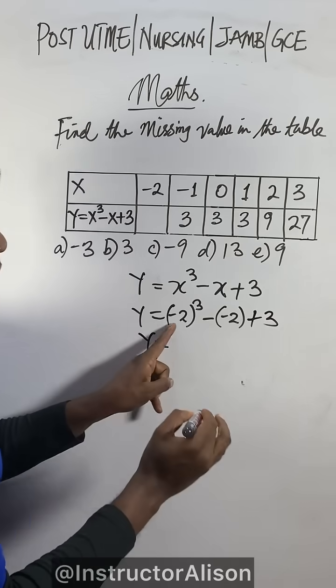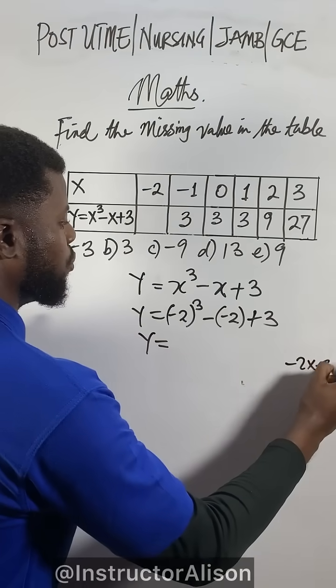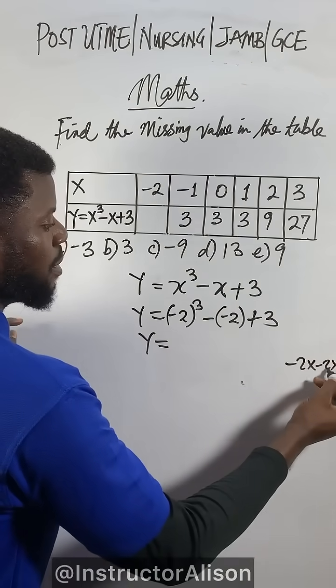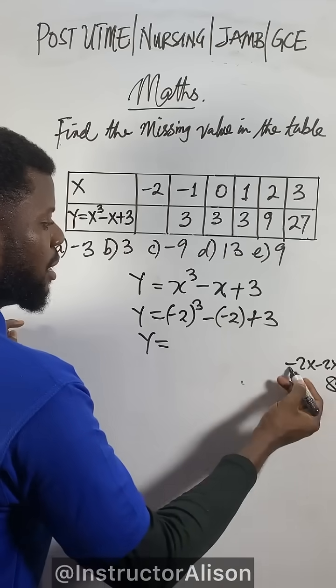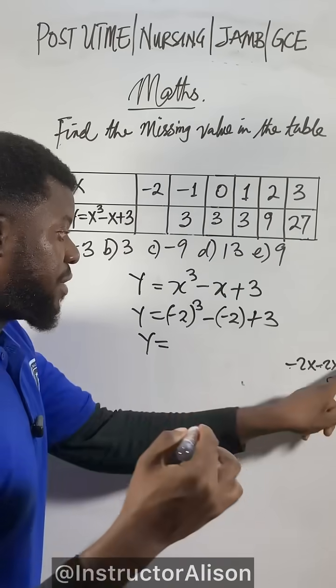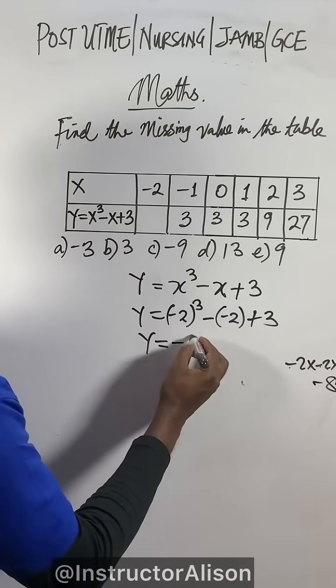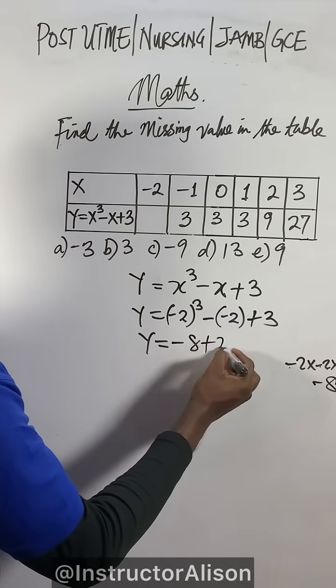Now we calculate -2 cube. -2 times -2 times -2. 2 times 2 times 2 is 8. Negative times negative is positive, positive times negative is negative. So negative times negative times negative gives us negative 8.